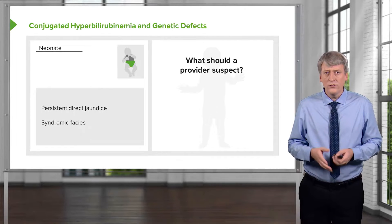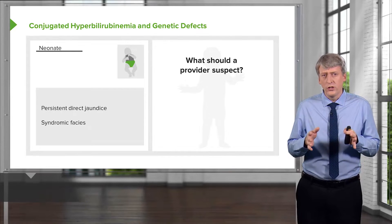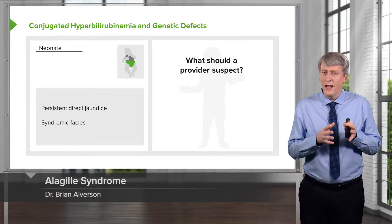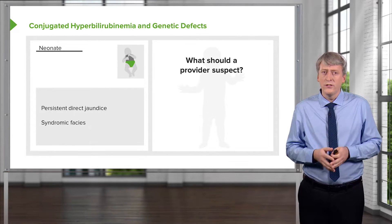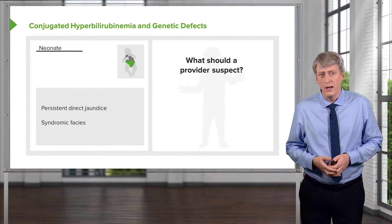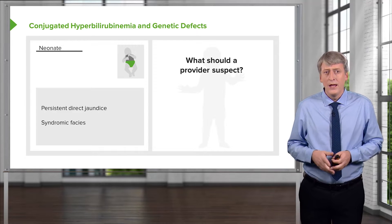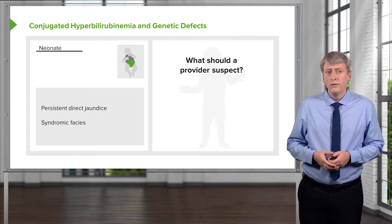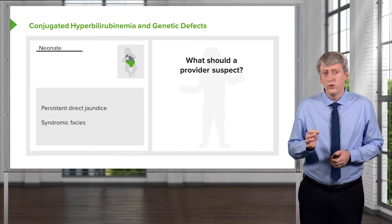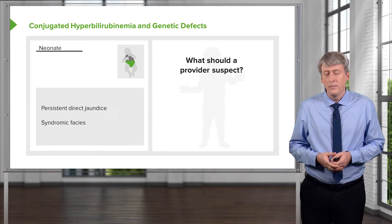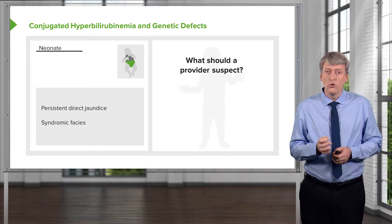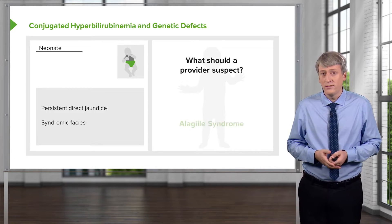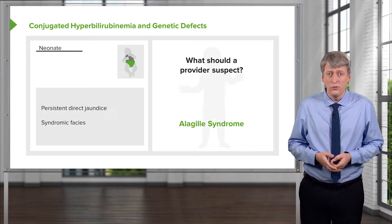Let's start to look at some of these problems one at a time and try to identify what could be the cause of a child's conjugated hyperbilirubinemia. Here's an example: a neonate is born and has persistent direct hyperbilirubinemia and you notice syndromic abnormal facies. What should you suspect? The answer is Alagille Syndrome.